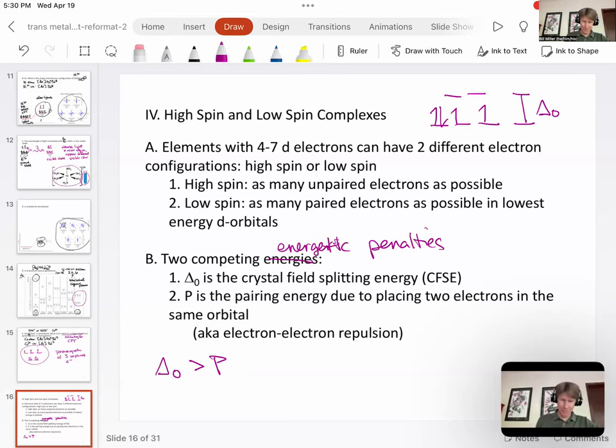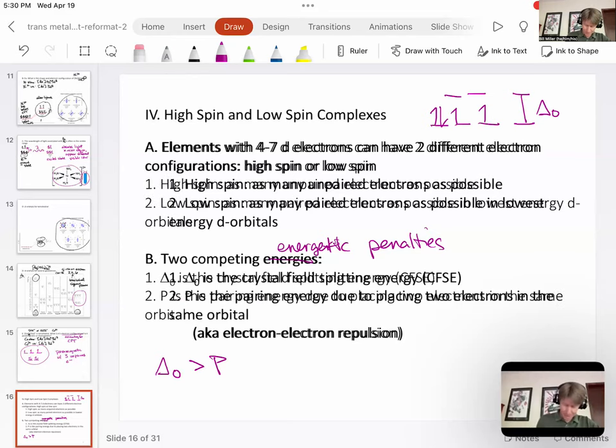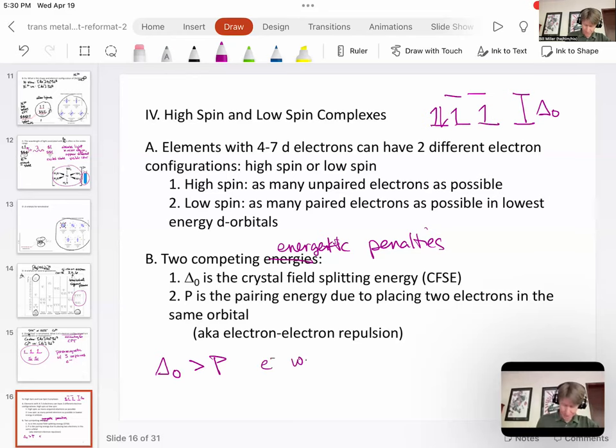And if the delta zero, the crystal field splitting energy is greater than the pairing energy, the penalty is greater, then electrons will pair.